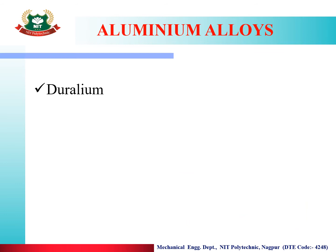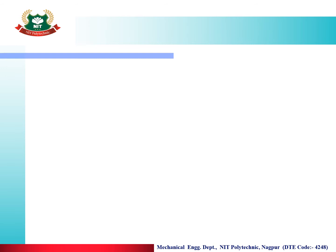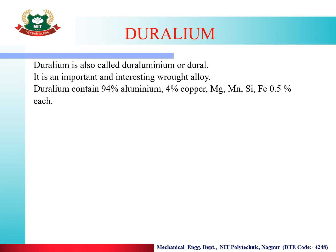Now we will look at different types of Aluminium Alloys. The four most important alloys are: Duralumin, Y-Alloy, Hindalium and Magnelium. Duralumin is very frequently asked in exams — there is no paper without a question on Duralumin. It is also called Dural.